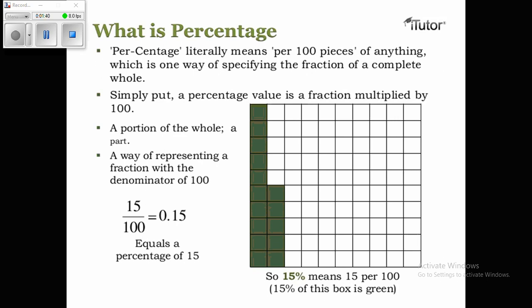Fifteen divided by one hundred is equal to 0.15, which equals a percentage of fifteen. So fifteen percent means fifteen per hundred. For example, if fifteen percent of this box is green, it means out of one hundred, fifteen boxes are represented from this box.